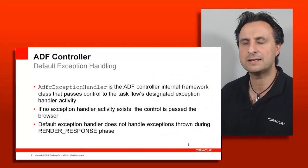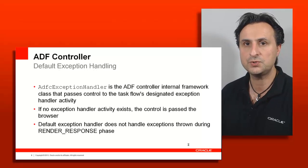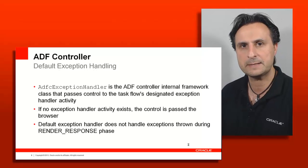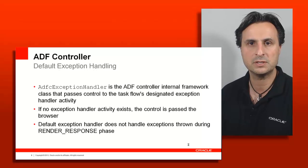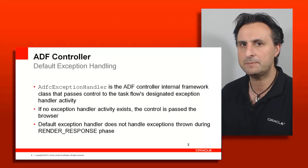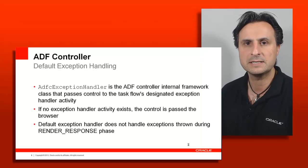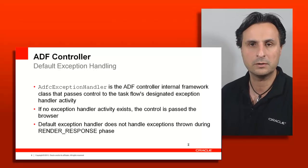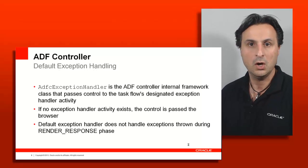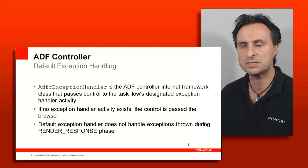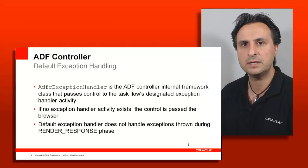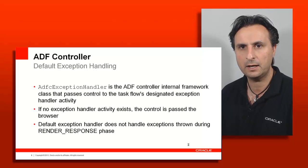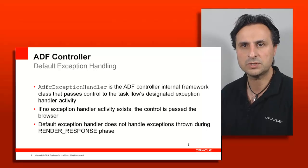The framework has a default exception handler, and as soon as there is an exception, it's passed on to that handler. One exception it doesn't handle is those that happen during render response — basically when navigation happened to the next view and during the flush of the view, if there is an exception in the managed bean, the task flow is no longer in control. That means you have to handle it yourself, either on the view layer — as covered in the fourth episode — or by changing the exception handler of the framework. Changing the framework exception handler is really a last resort, but there is an option to put in your own exception handler and try to handle exceptions not handled by the default.